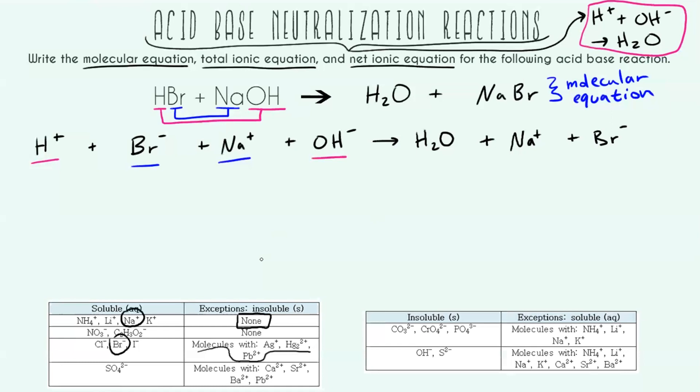Because HBr is soluble, we're going to write that as aqueous. NaOH, also soluble, and we can check that by looking at OH- is usually insoluble, but it has an exception with Na. This will also be aqueous. And now H2O, this one's a little bit tricky. Even though it is in water, this is going to be a liquid because this is not ionic. It's not breaking apart. It's just a molecule that is in liquid state. And then NaBr, because that's soluble, this will still be aqueous.